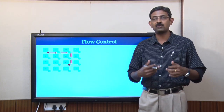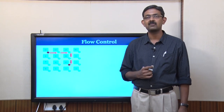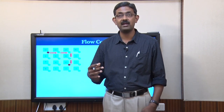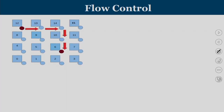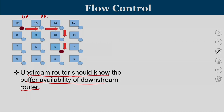We will understand the concept of flow control. We are going to discuss network on chip using the buffering concept, so packets will be buffered in the router until they get a productive port. There can be scenarios where you don't get a productive port in the current cycle due to conflict between other packets or due to lack of buffer availability in the next router. Consider a case where a packet is moving from router 12 all the way to 16 using XY routing. The upstream router should know the buffer availability of the downstream router. Router 12 is the upstream and router 13 is the downstream. Before 12 sends a packet to 13, it should know whether there is a buffer available in 13.